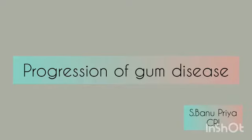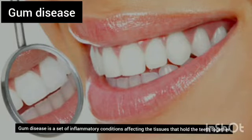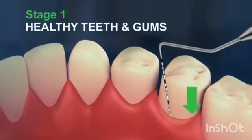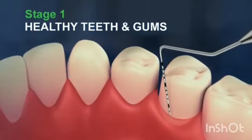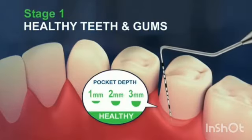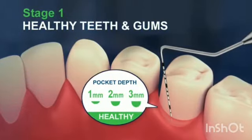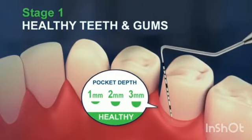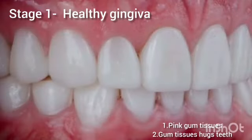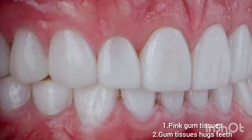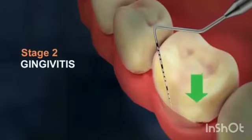Here is the video progression of gum disease. Gum disease is an inflammatory condition affecting the tissues that hold the teeth together. There are various stages. Stage one is healthy teeth and gums, which has a pocket depth of about 2 to 3 mm, does not show any bleeding and sensitivity, and has healthy pink gum tissues that hug the teeth.